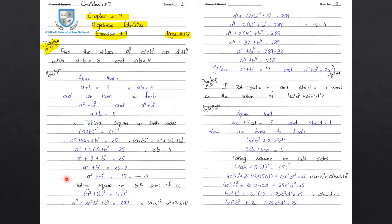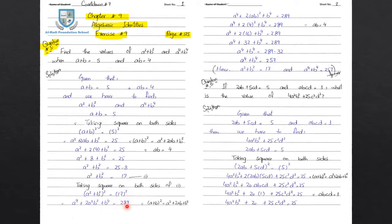Now we open the identity: a plus b whole square is equal to a square plus 2ab plus b square. So a raised to power 4 plus 2a square b square plus b raised to power 4 is equal to 17 squared, which is 289.